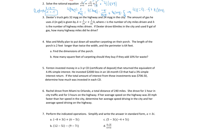Multiplying those together: 4x equals negative 20 plus, distributing, 5x plus 25. Combining things together: 4x equals negative 20 plus 25, which is 5, plus 5x. Subtracting 5x gives negative x equals 5, so x equals negative 5. But remember — that's our restriction. So we're going to say there is no solution, because that was our restriction.